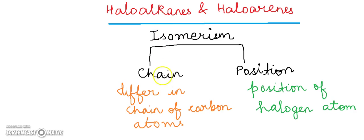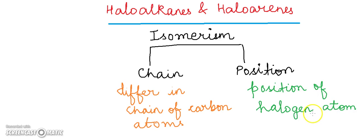So we have two types of isomerism in haloalkanes: chain isomerism, where there is a difference in the chain of carbon atoms, and position isomerism, where there is a difference in the position of the halogen atom. We will understand more about isomerism in haloalkanes and haloarenes with examples.